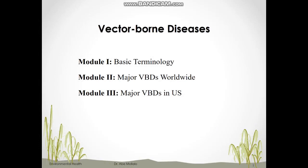These are major vector-borne diseases worldwide but they are not common in the United States. In the last module, we will move to the major vector-borne diseases in the US such as West Nile virus and Lyme disease. West Nile virus is the most frequent mosquito-borne disease in the US, infecting almost 3,000 people every year. Lyme disease is the most frequent tick-borne disease in the US — every year 30,000 people get Lyme disease. We will see their geographic distribution, transmission cycles, and symptoms.